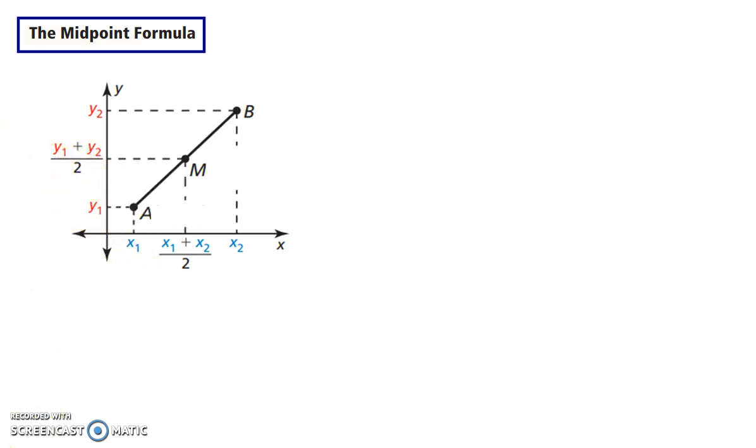So, if I have a line here, where A has the coordinates x1, y1, and B has the coordinates x2, y2, then M, which is halfway in between the two, would have the coordinates of this for x, and this for y. So, that would look like this. The first coordinate, the x coordinate, would be the average of the two x coordinates. The y coordinate is the average of the two y coordinates. So, this is my midpoint formula right here.